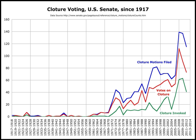A cloture procedure similar to that of the United Kingdom was adopted on March 8, 1917, by the Senate of the United States. This was invoked for the first time on November 15, 1919, during the 66th Congress, to end a filibuster on the Treaty of Versailles. The Senate's cloture rule originally required a supermajority of two-thirds of all Senators to be considered filibuster-proof. The Senate tried 11 times between 1927 and 1962 to invoke cloture but failed each time.